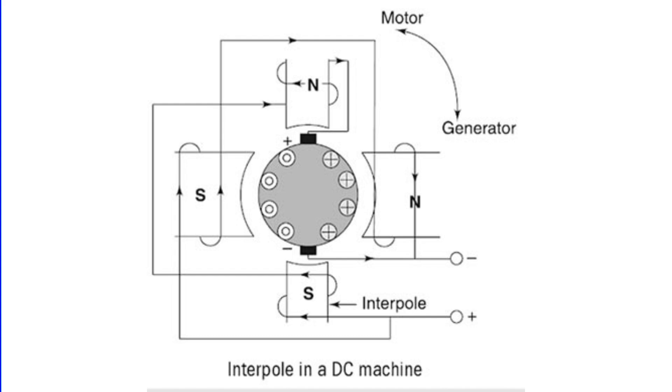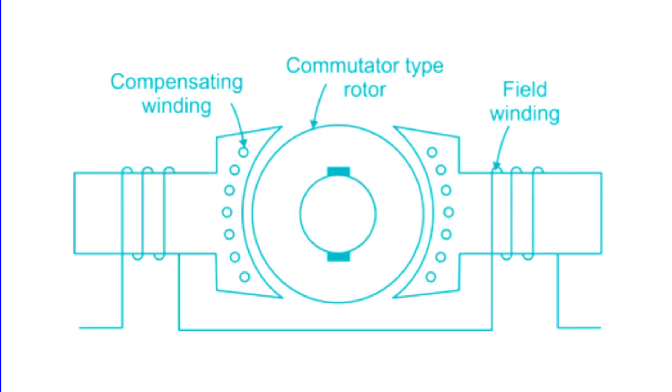Through interpole implementation, we see a more flexible and reliable solution to the limitations of brush shifting, paving the way for smoother and more efficient machine operations. Let's explore another crucial aspect of DC machines: compensating windings. Similar to interpoles, compensating windings are designed to enhance the performance of these machines under various operational conditions, particularly at heavy loads.